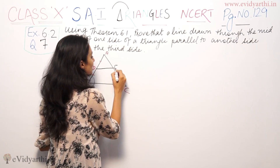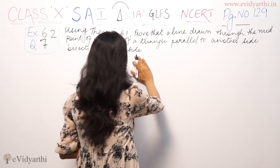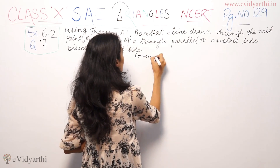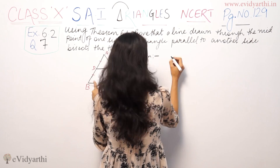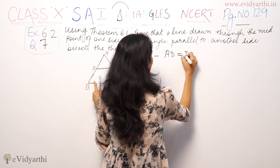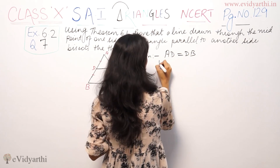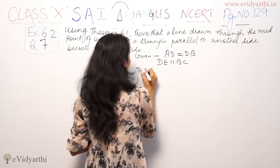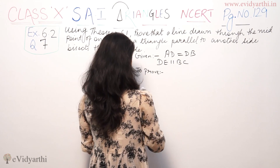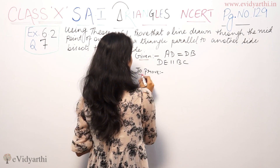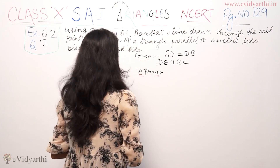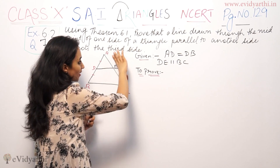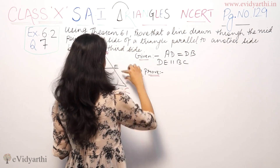Suppose E is a point on AC. So that means BE is parallel to this side. The line bisects the third side. Given that AD is equal to DB because D is the midpoint. E bisects AC, and the line segment DE bisects AC, dividing it with AB.